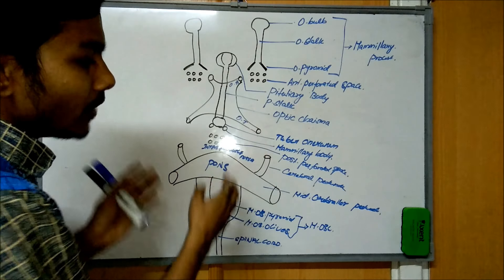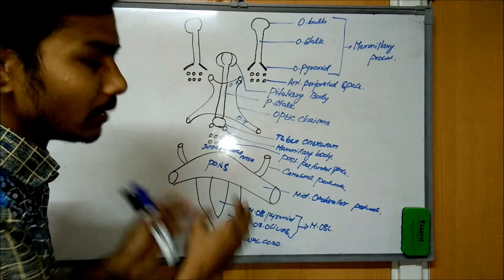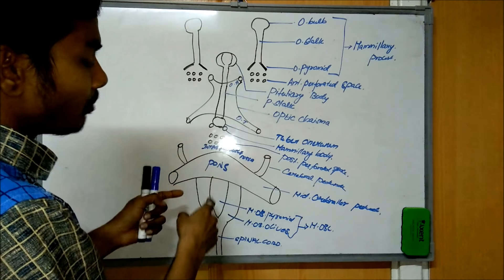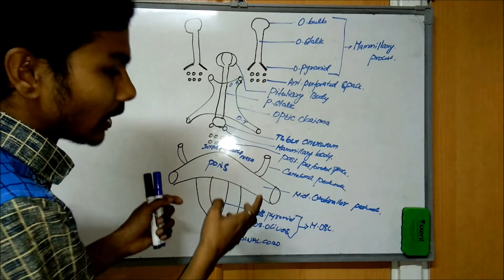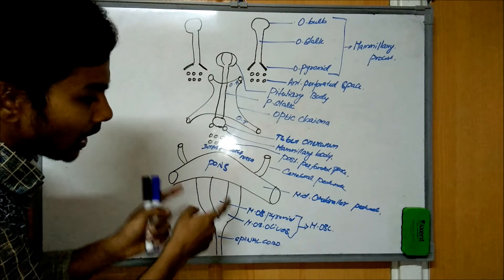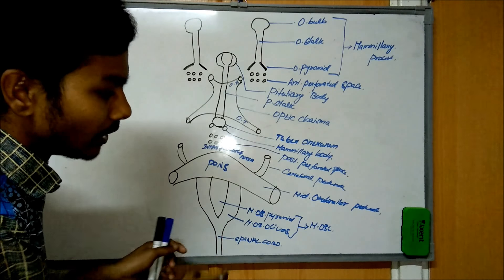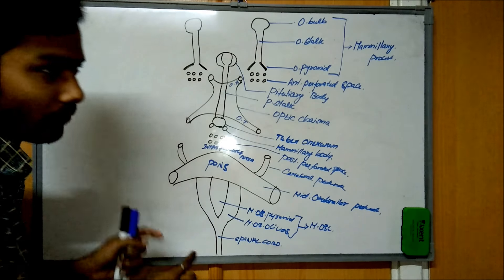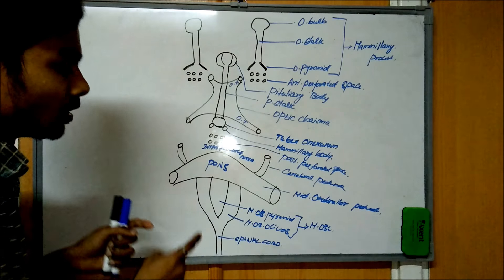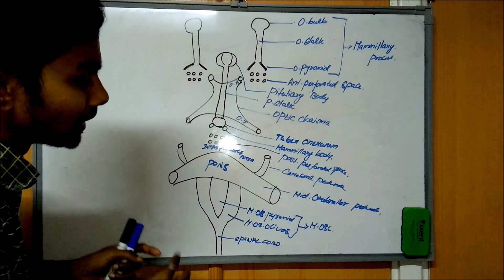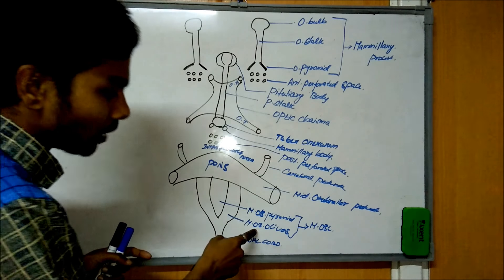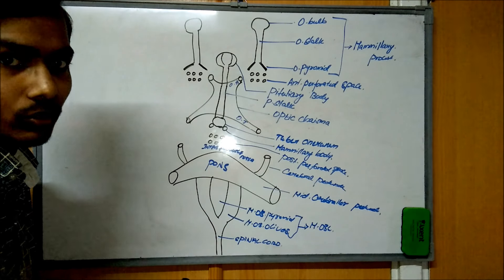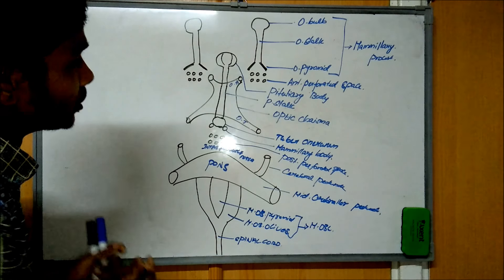After the mammillary body, we have the posterior perforated space. We have two spaces: anterior perforated spaces and posterior perforated spaces or substance. After that, we move on to the pons — in the pons we have the middle cerebral peduncle, and from the pons it gives rise to the cerebral peduncle. After that, we have the medulla oblongata. In the medulla oblongata we have two parts: the medulla oblongata pyramid and the medulla oblongata olives. Then it moves on to the spinal cord.